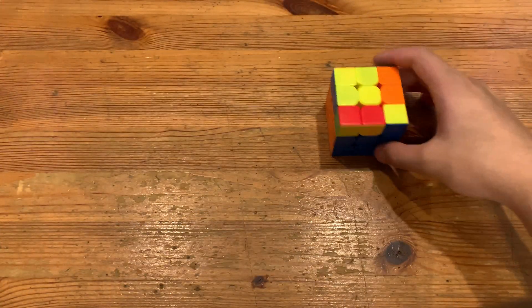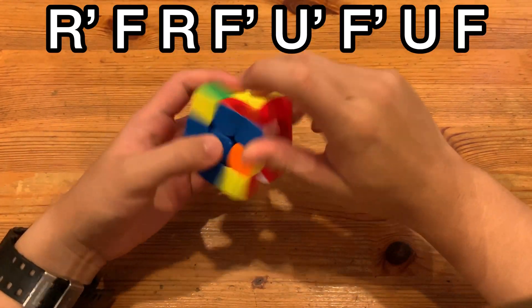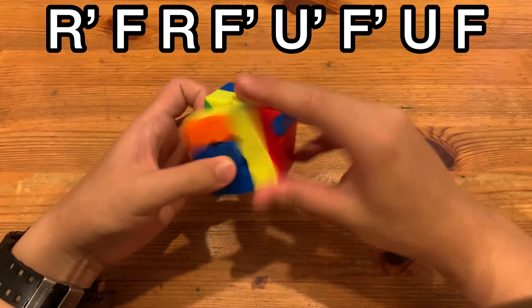Finally, the alternative alg for this video goes like this: you just do a sledge and then insert the pair with F prime U F. This one is actually kind of underrated.